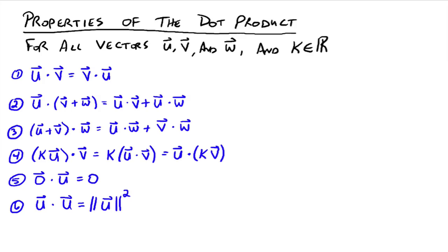There are some properties of the dot product. For all vectors u, v, and w, and let k be a real number: u dot v equals v dot u. Properties two and three are like the vector versions of the distributive property. u dot (v plus w) equals u dot v plus u dot w, and similarly (u plus w) dot v equals u dot v plus w dot v.